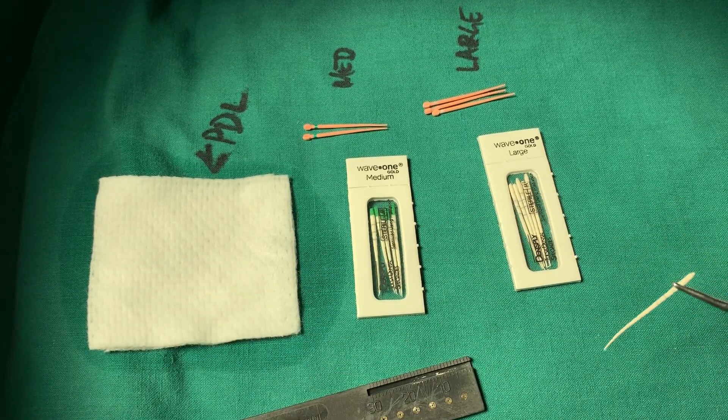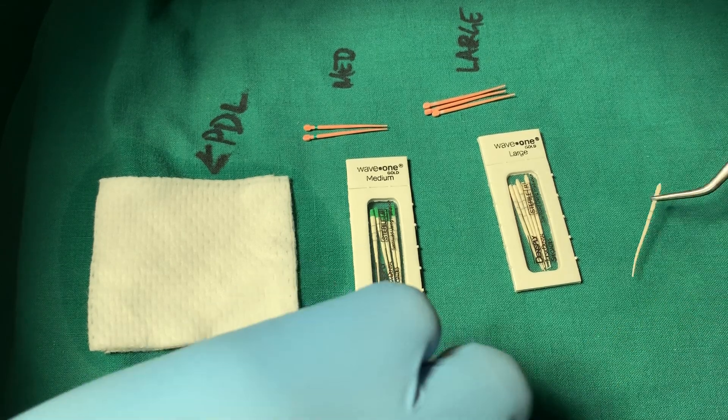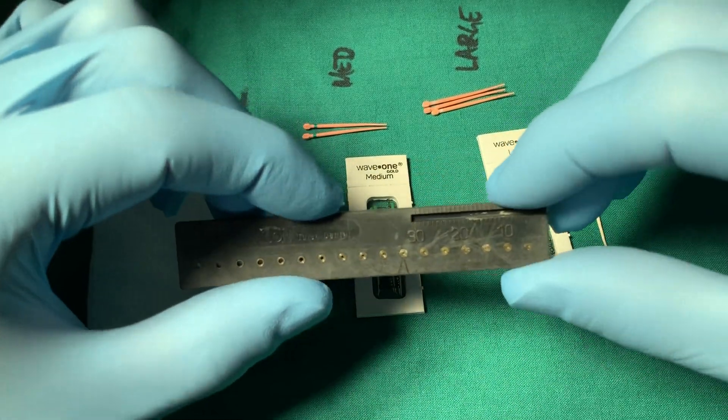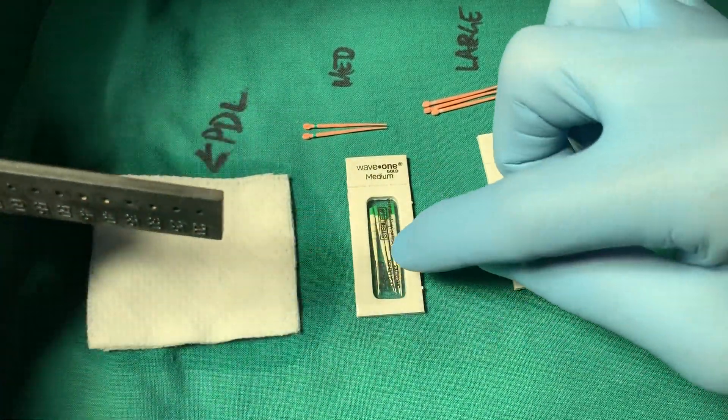And then we measure that with our ruler, and then we reconfirm our length. However, the question was, how do you know if your paper point is actually going out the end of the tooth? That's a great question. Let's check. So one of the ways we can do that is to check the size. Let's gauge the size of these paper points.